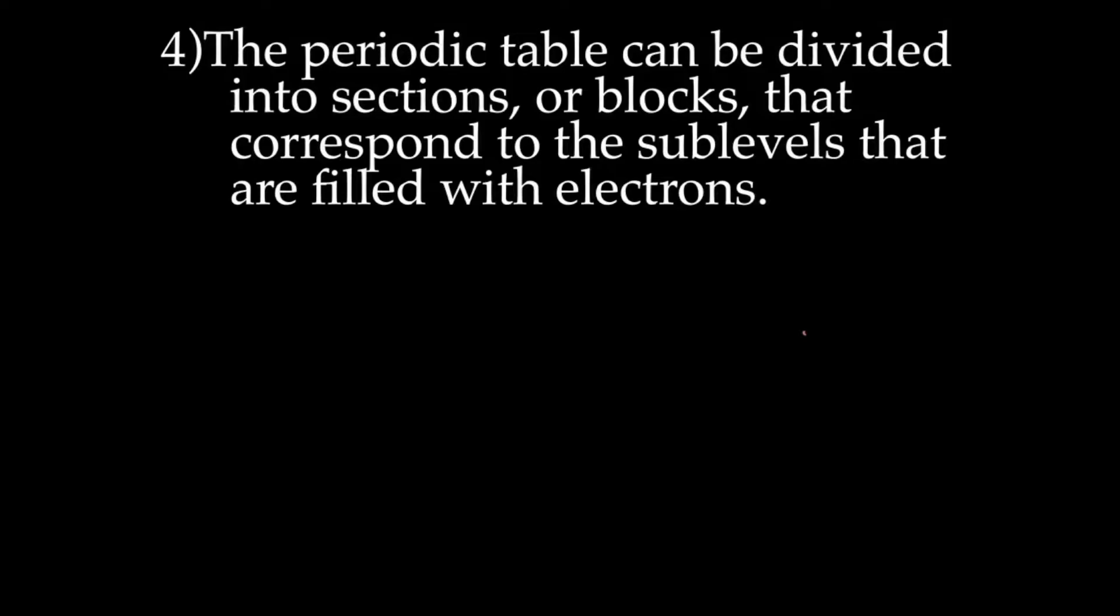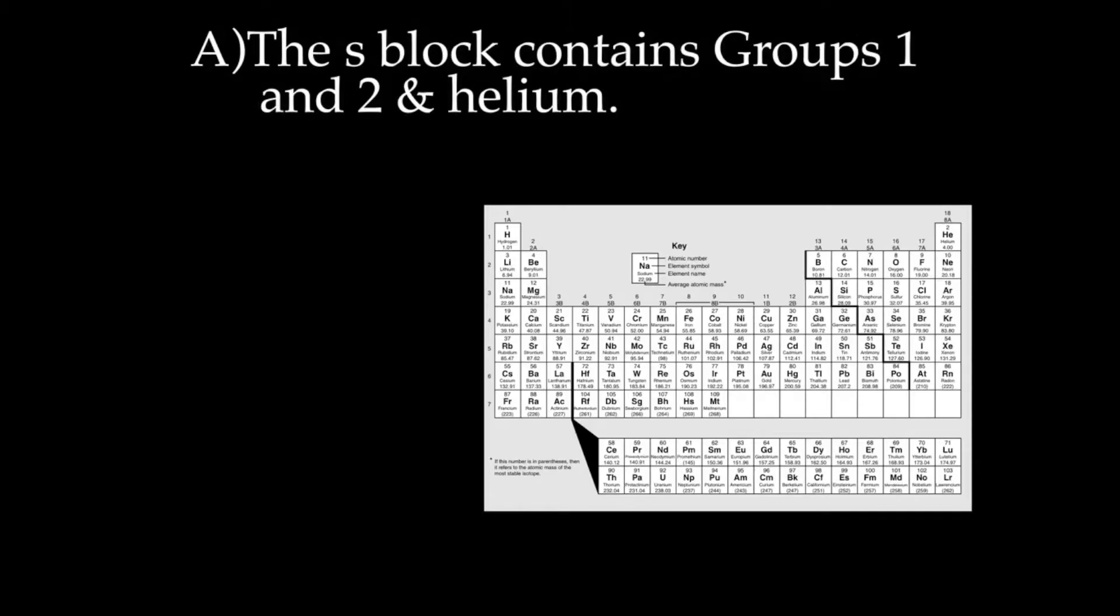The periodic table can be divided into sections or blocks that correspond to the sublevels that are filled with electrons. So the first block we have is the s-block. The s-block contains groups 1, 2, and helium. So the s-block are those right there.